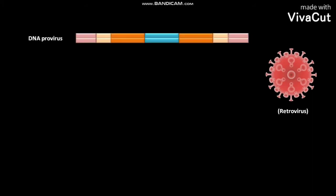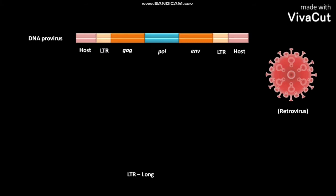the retrovirus produces a DNA provirus. The DNA provirus consists of host sequences, LTR sequences, GEC gene sequence, POL gene sequence, and ENV gene sequence. LTR stands for long terminal repeat.